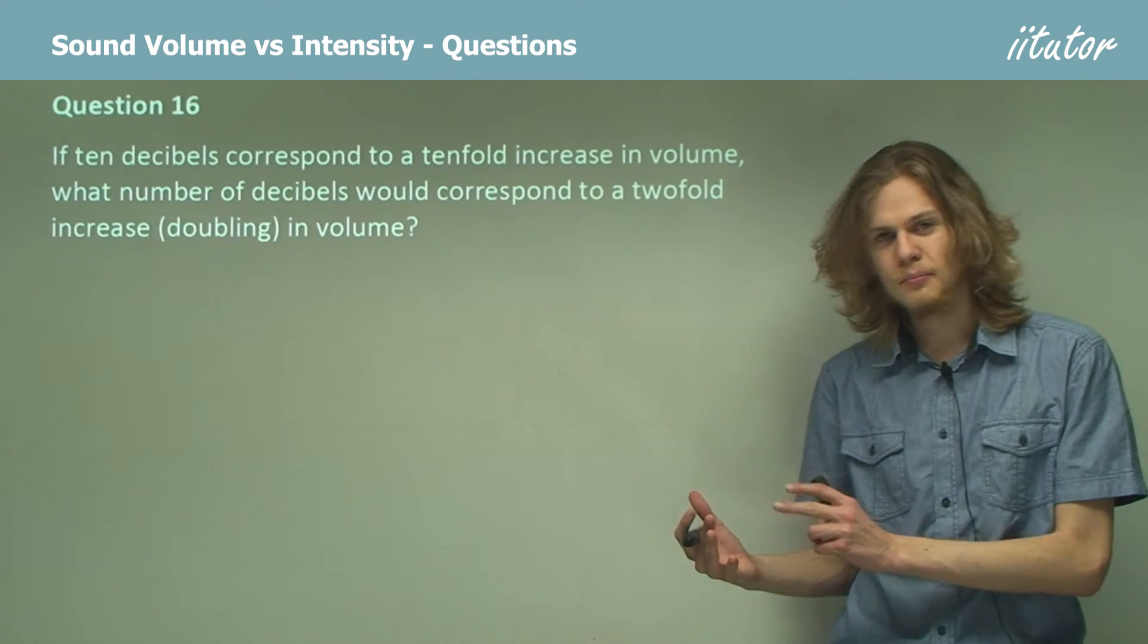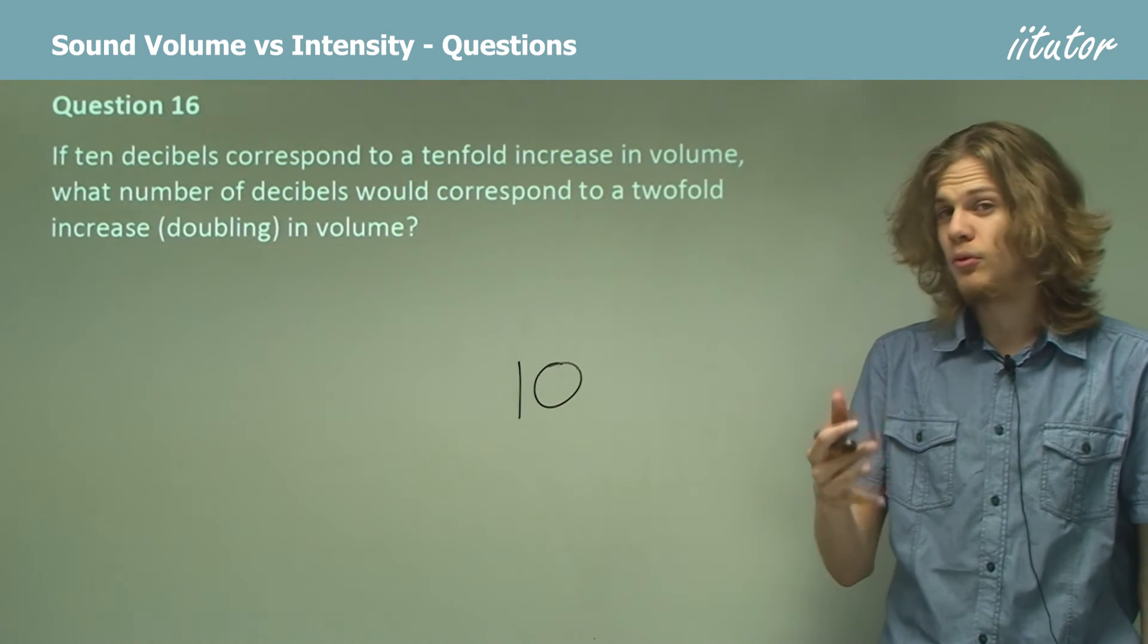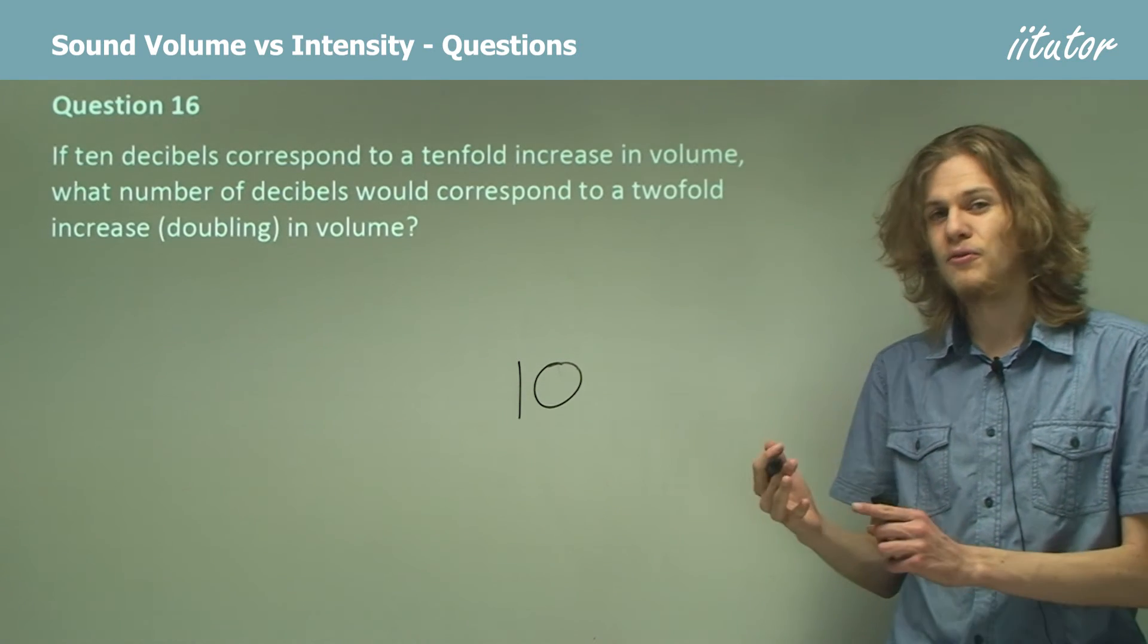We add 30, we'll get a thousand. So what we're doing is we're taking 10 and we're raising it to the power, not of the number of decibels, but by a tenth of the number of decibels.